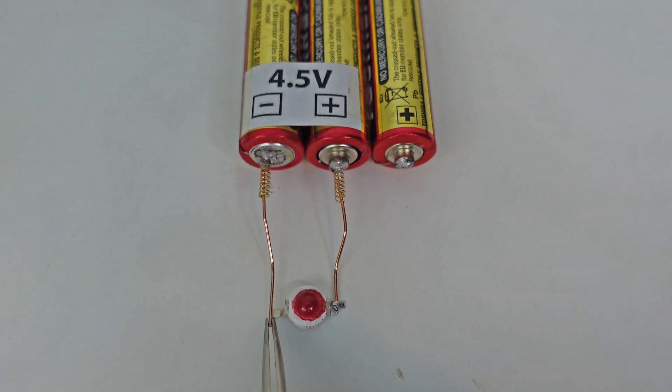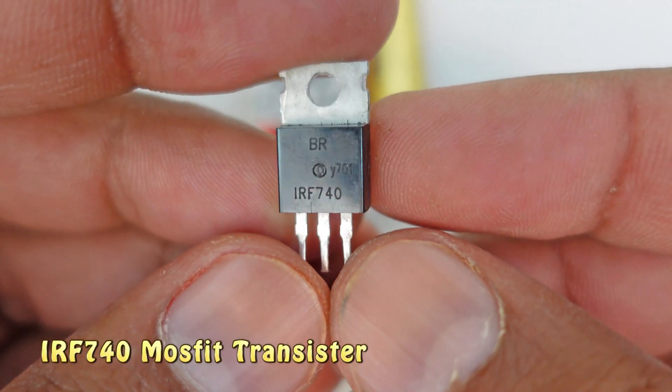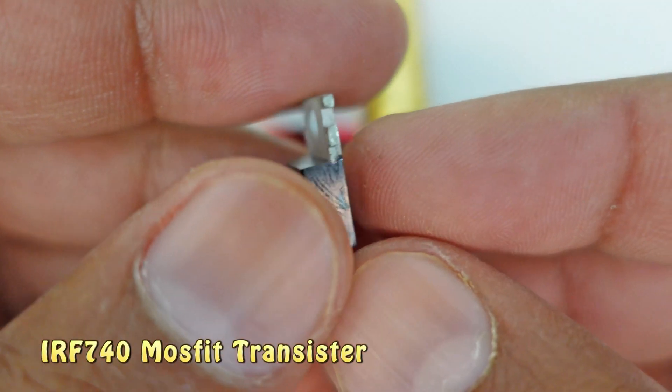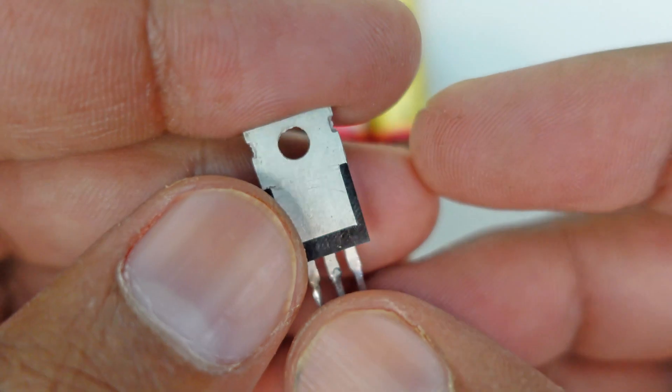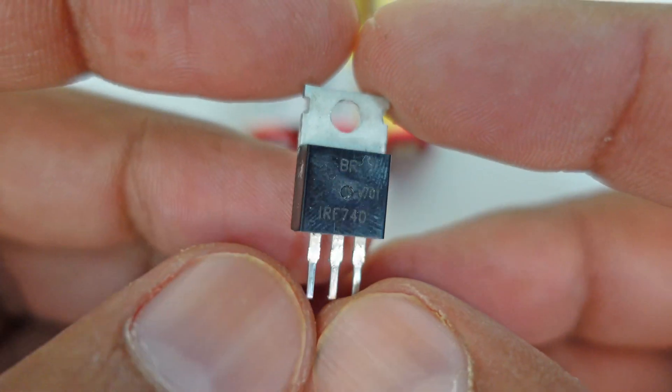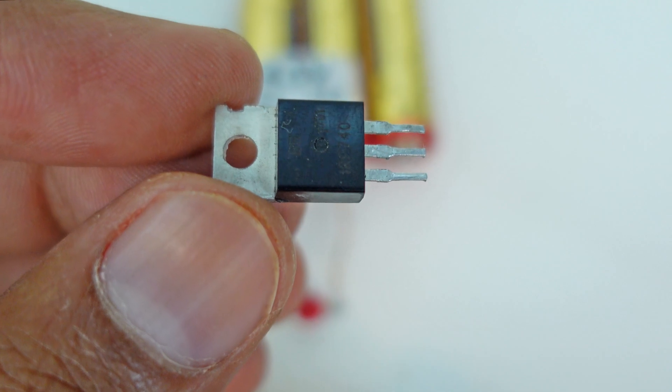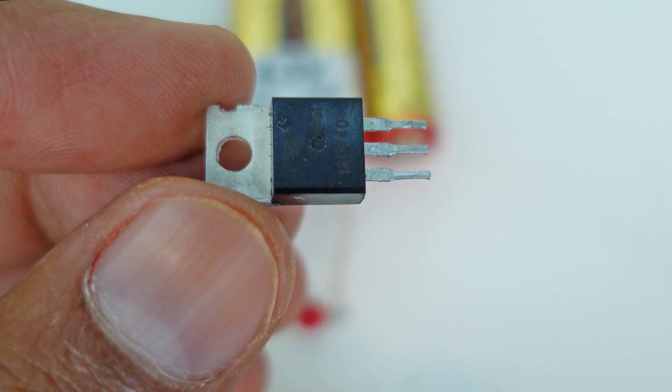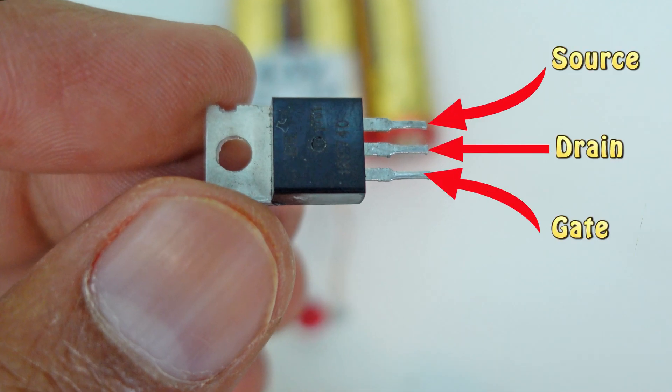Now from here something interesting starts. Here we have a MOSFET transistor. By this we try to understand a big phenomenon of physics. First we understand the points of MOSFET transistor. Any MOSFET transistor always has three points: source, drain, and gate.